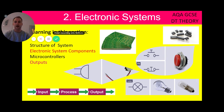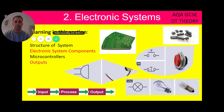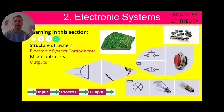Hello, Mr. Hill here. Today we're just going to have a look at GCSE product design theory. This may be part of the exam and this is topic two, electronic systems. The learning we'll cover in this section is the structure of a system, electronic system components, microcontrollers and outputs.